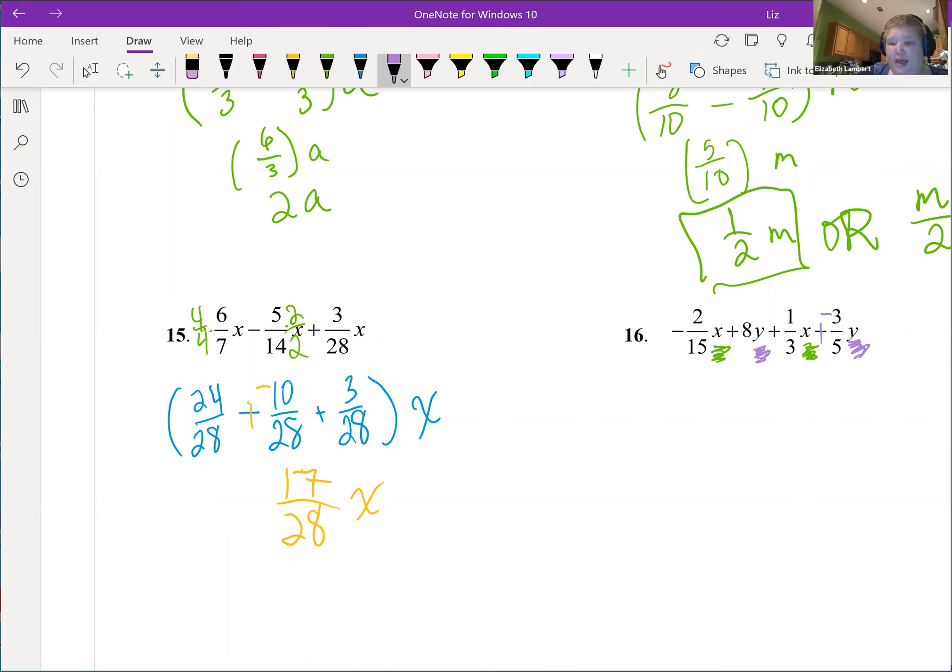All right, so x's first. That is going to be negative two-fifteenths plus one-third, there's my x's, plus—that's the other nice thing about changing the subtraction to adding the opposite, now everything's plus, I don't have to wonder what goes here is a plus—and then we have eight holes plus negative three-fifths, and those are our y's.